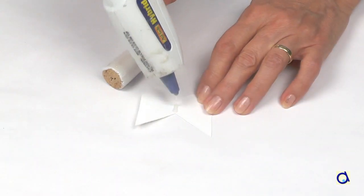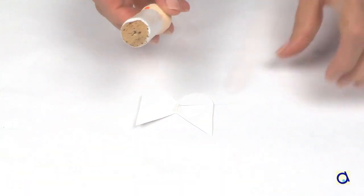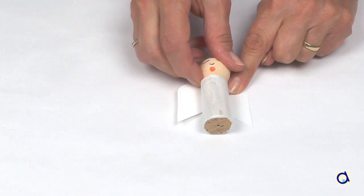Unfold the wings and put a dot of hot glue on the fold. Glue the wings in place on the back of the angel.